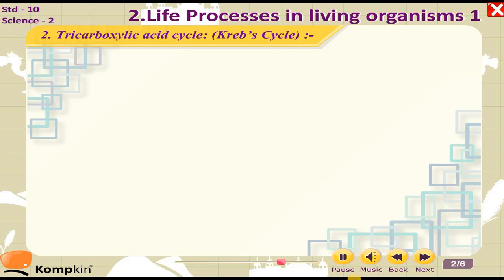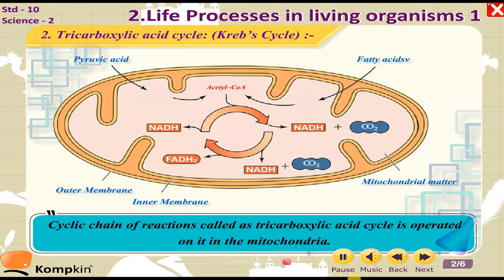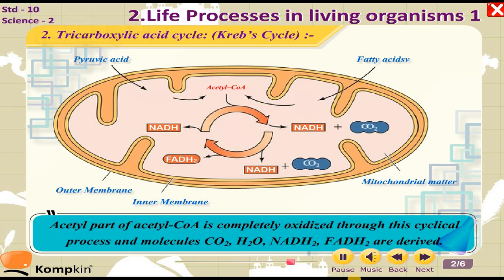The second step is the tricarboxylic acid cycle, also known as the Krebs cycle. Both molecules of acetyl CoA enter the mitochondria, where a cyclic chain of reactions called the tricarboxylic acid cycle operates. The acetyl part of acetyl CoA is completely oxidized, and CO₂, H₂O, NADH₂, and FADH₂ are derived.